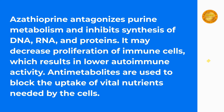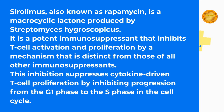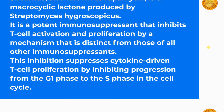Antimetabolites are used to block the uptake of vital nutrients needed by the cells. Sirolimus, also known as rapamycin, is a macrocyclic lactone produced by Streptomyces hygroscopicus. It is a potent immunosuppressant that inhibits T-cell activation and proliferation by a mechanism distinct from all other immunosuppressants. This inhibition suppresses cytokine-driven T-cell proliferation by inhibiting progression from the G1 phase to the S-phase in the cell cycle.